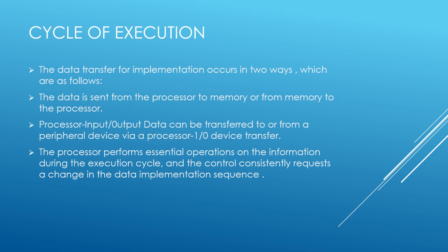Execution cycle: Data transfer for implementation occurs in two ways. Data is sent from the processor to memory or from memory to the processor. Alternatively, input or output data can be transferred to or from a peripheral device via the processor. During the execution cycle, the processor performs essential operations on the information, and the control unit may request or change the data implementation sequence.